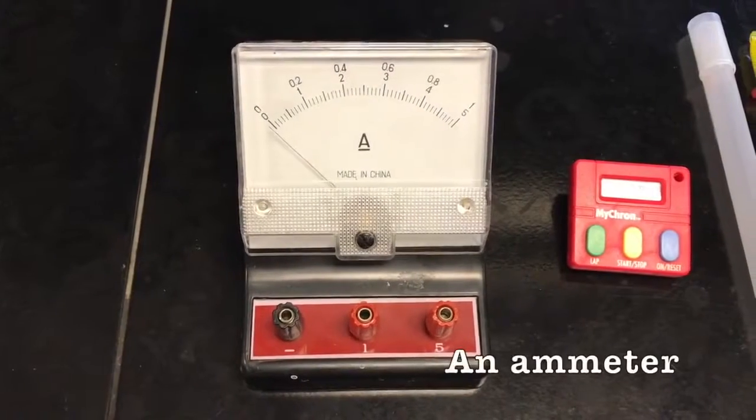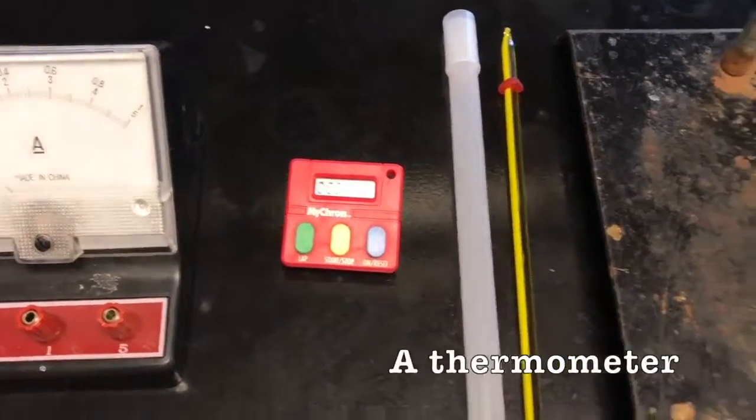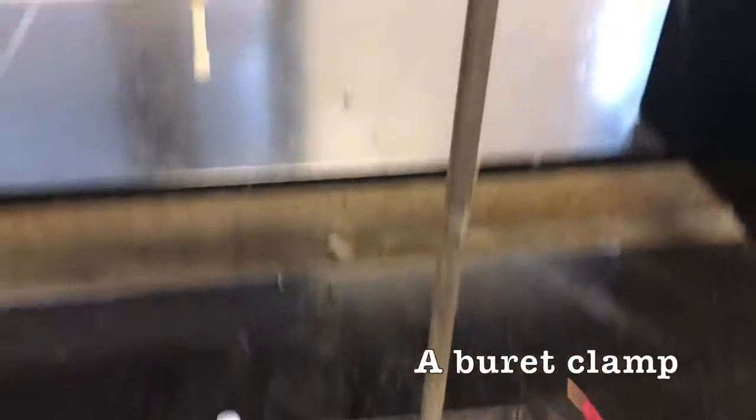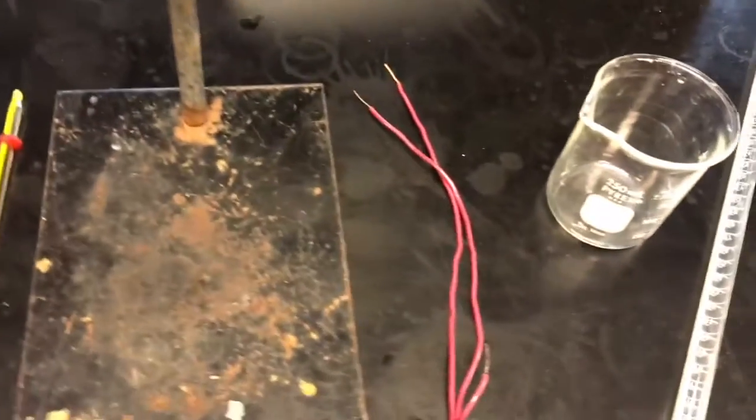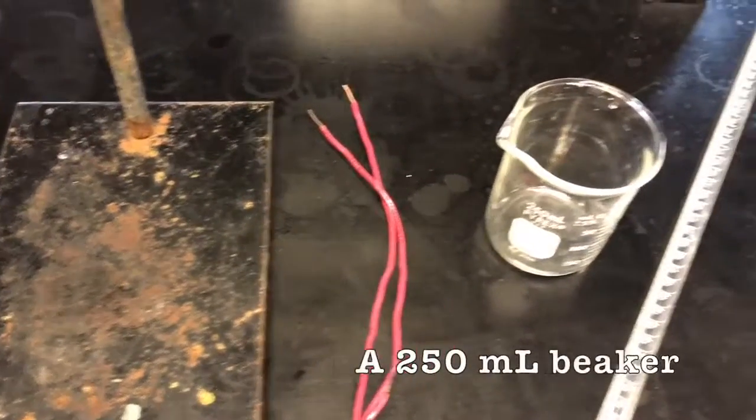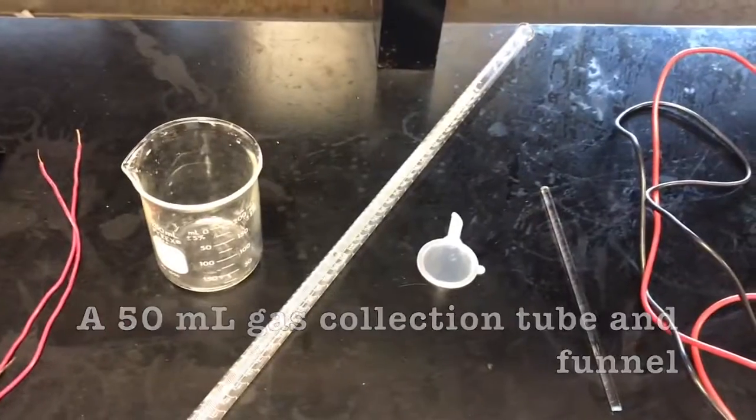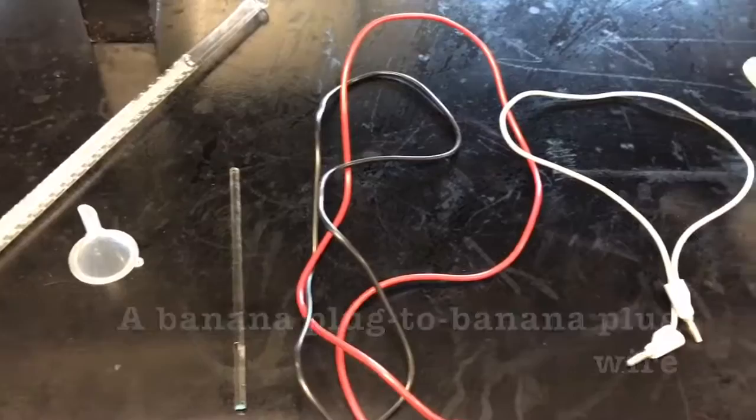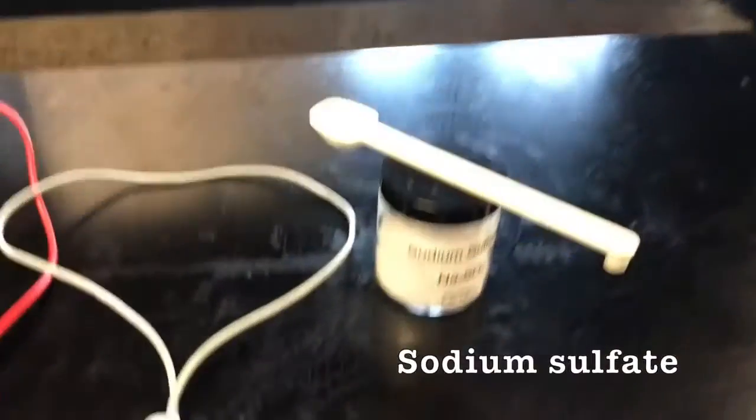An ammeter, a timer, a thermometer, a ring stand, a burette clamp, two pieces of copper wire with both ends exposed, a 250 ml beaker, a 50 ml gas collection tube and funnel, a stirring rod, two banana plug to alligator clip wires, one banana plug to banana plug wire, and sodium sulfate.